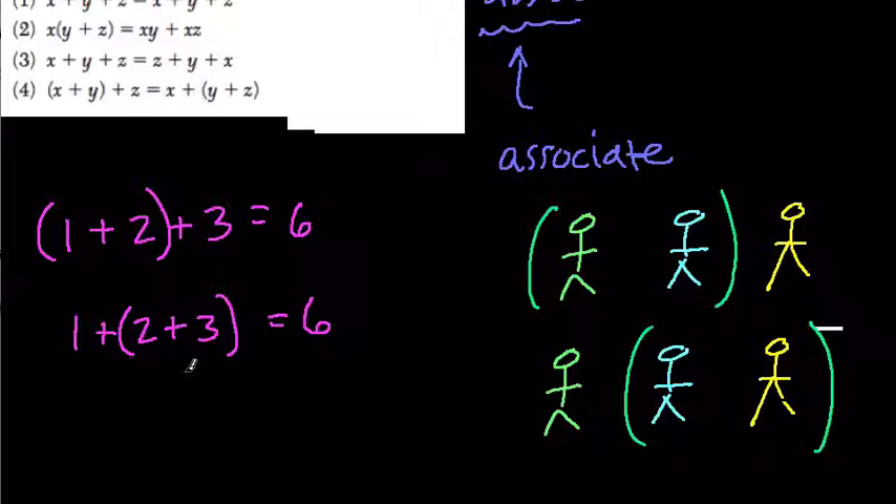Then the associative property is true for that operation. So for addition, if we're adding everything, and multiplication, if we're multiplying everything, it doesn't matter how you group them. You'll still get the same result. So that's what we're looking for here: addition and multiplication, where the only real difference between the left and right sides of the equation is the way we grouped the numbers.